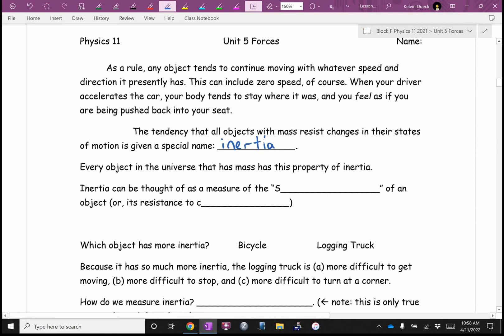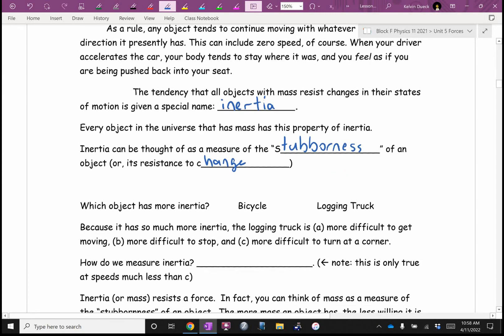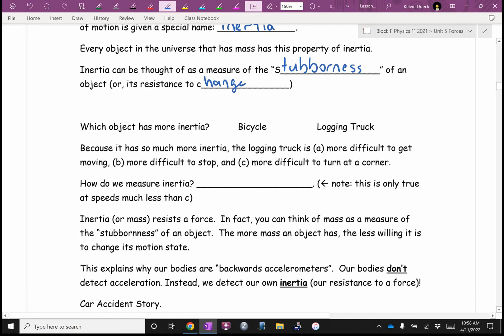Every object in the universe that has mass has inertia. I have a friend who likes to say you can think of inertia as a measure of the stubbornness of an object or its resistance to change. More inertia means it's less willing to change its motion state. So, what do you think? What has more inertia? A bicycle or a fully loaded logging truck? Because the logging truck has so much more inertia, it's more difficult to get moving and more difficult to stop once it starts moving and more difficult to turn at a corner. It resists changes to its motion state.